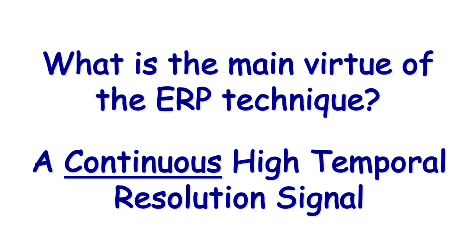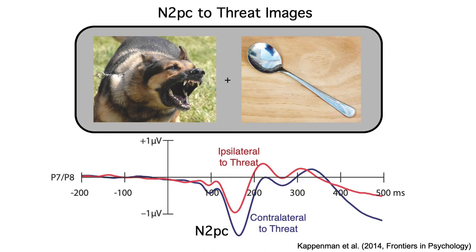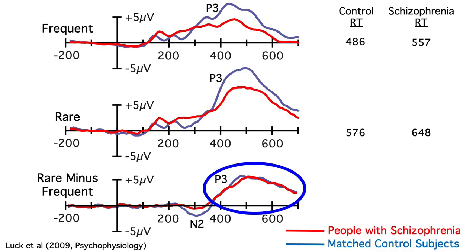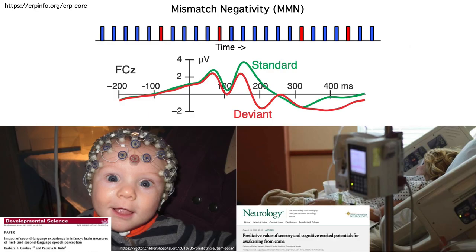Just to recap: ERPs are great because they provide a continuous, high-temporal resolution measure of the processes that occur between a stimulus and a response. This allows us to see neural processes that are not directly visible in behavior, such as shifts of covert attention, and it allows us to ask which processes are responsible for differences in behavior between conditions or between groups. ERPs also have another common use: ERP components like the mismatch negativity allow us to monitor processing in subjects who can't do behavioral tasks, such as infants and people in comas. So ERPs can help us understand neurocognitive functioning in the absence of behavioral measures, and when we can measure behavior, ERPs can help us understand the differences in behavior between groups or conditions.